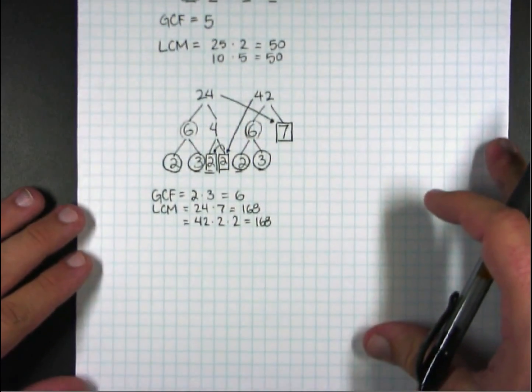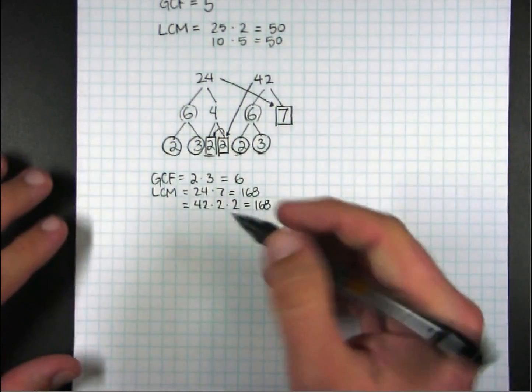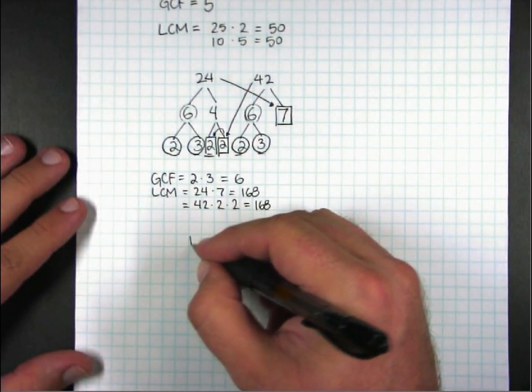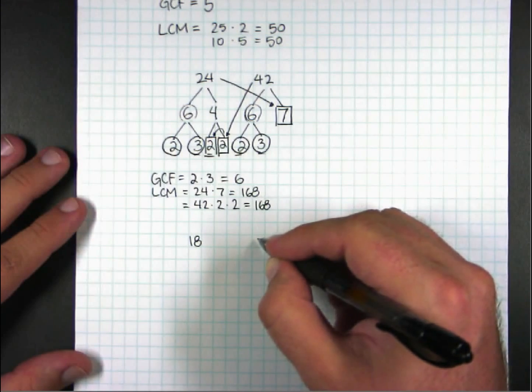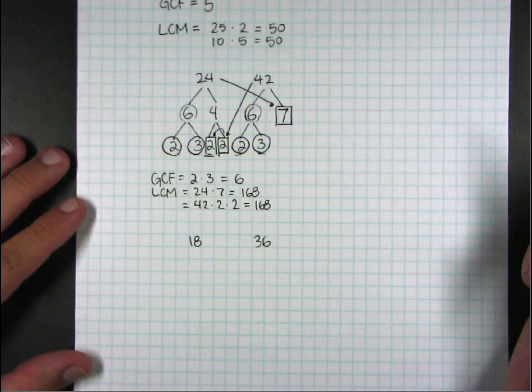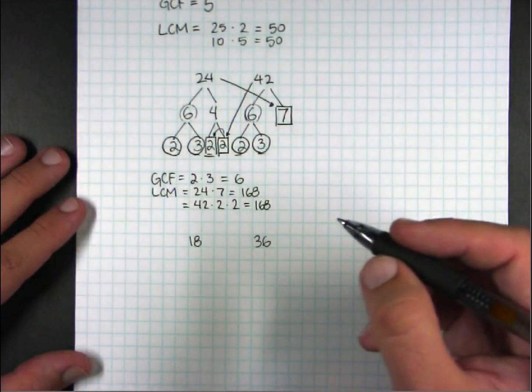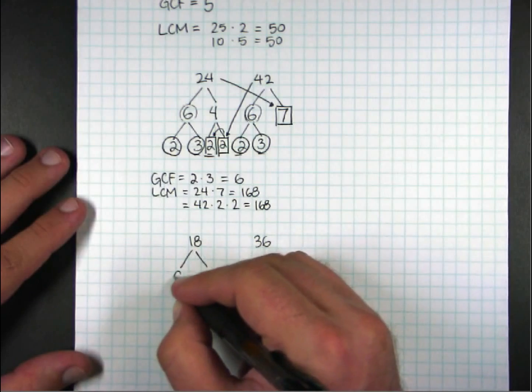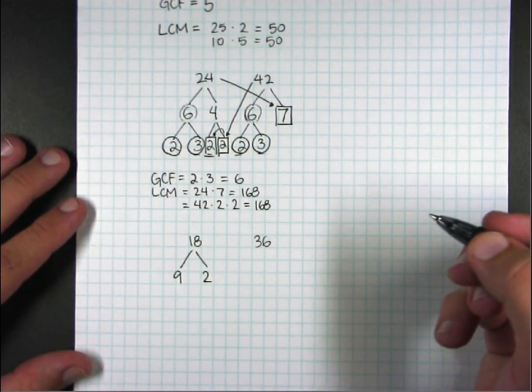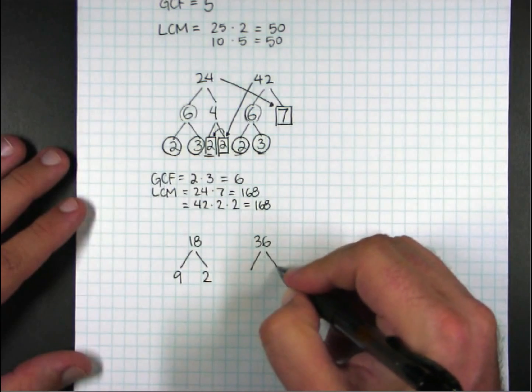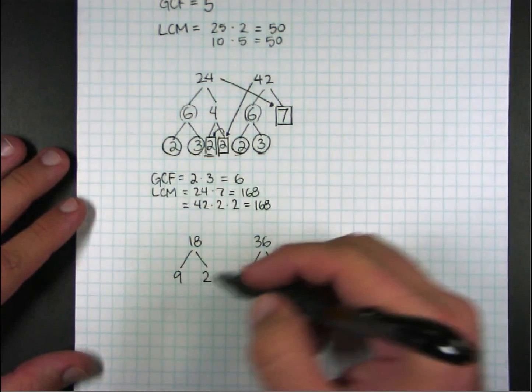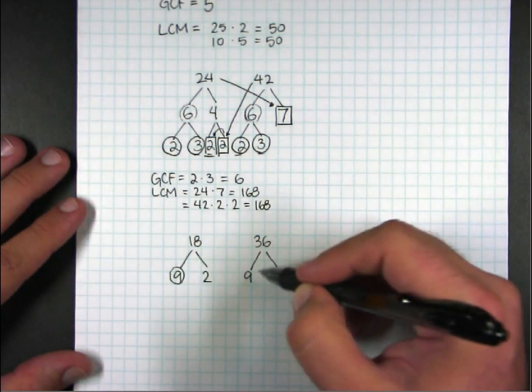Now, I want to show you one more case. And that would be when you have numbers such as 18 and 36. If you already see what I'm going to do, then don't jump ahead. Or don't spoil it for the others, I should say. 18 factors into 9 and 2. 36 factors into 9 and 4. If you're the type that sees, okay, they have a 9 in common, I can stop there. You can stop there.